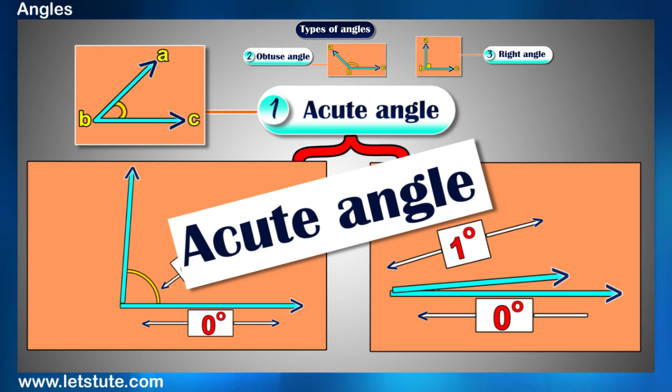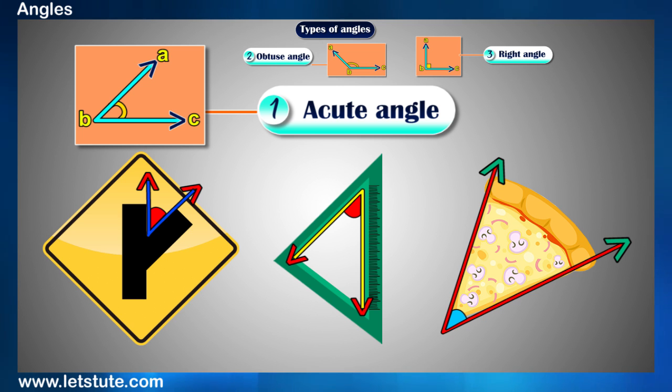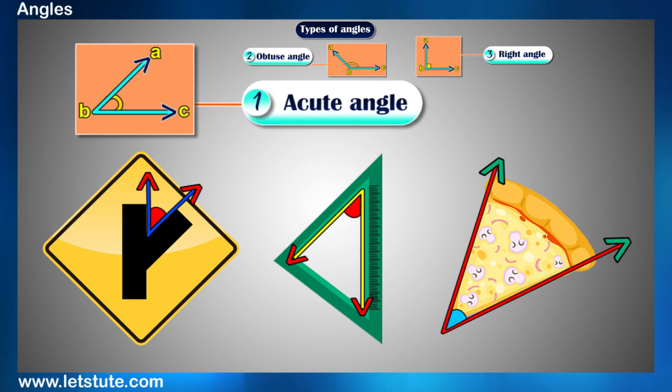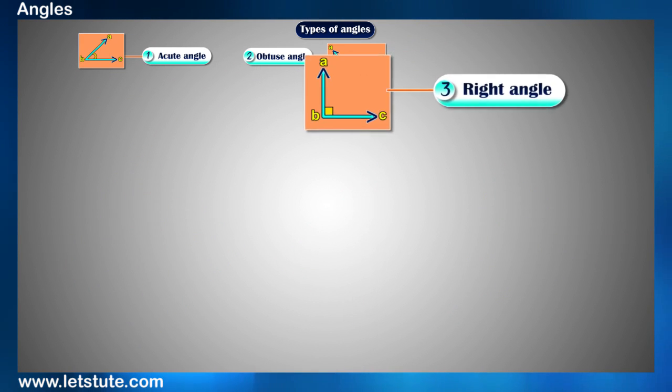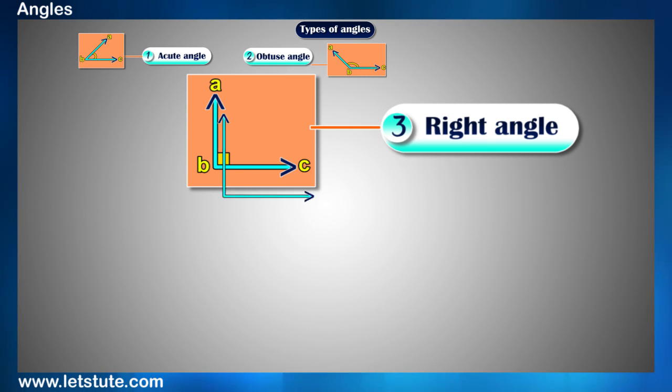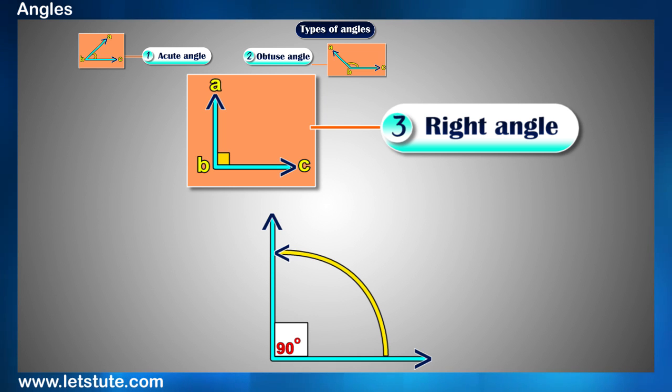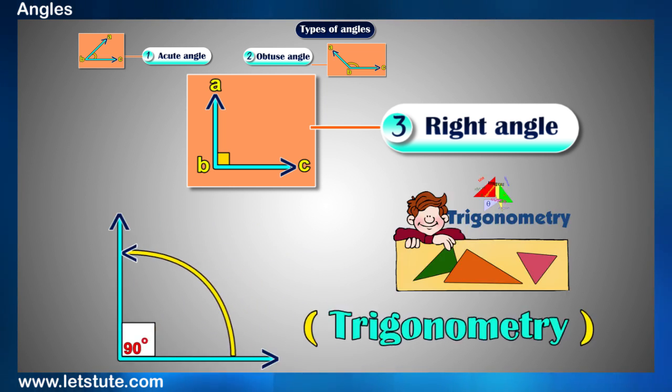And surely we must have observed them in various of such places. The next type of angle is called as right angle because the measure of the angle is 90 degrees. And based on this angle, you will learn a very important concept of trigonometry.